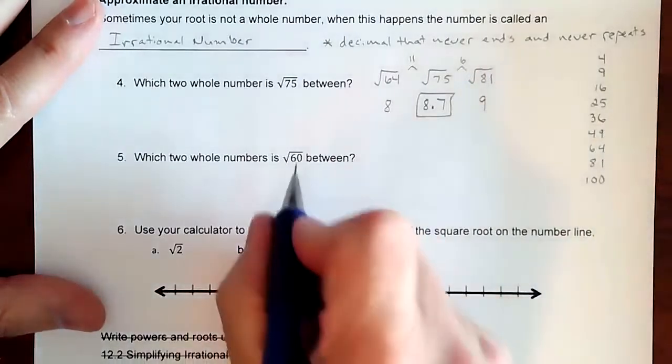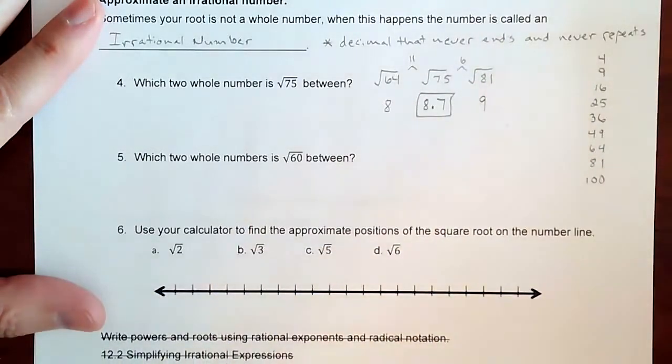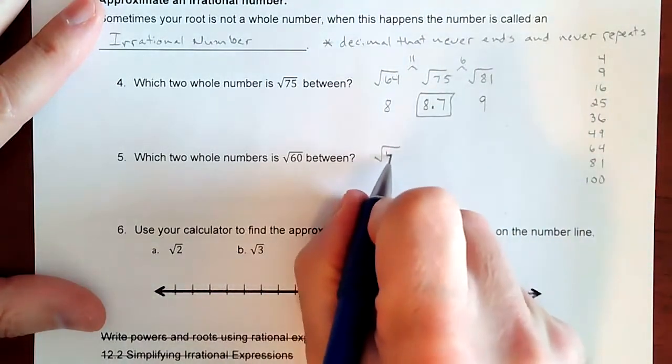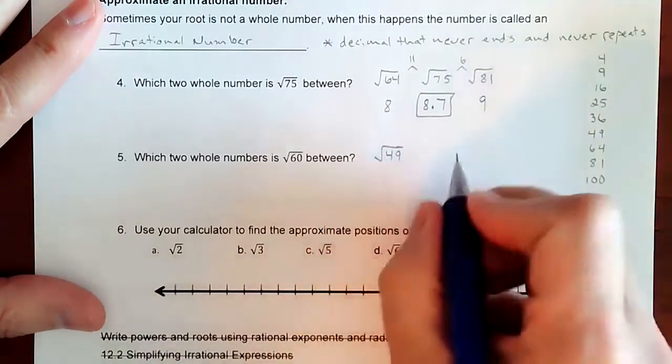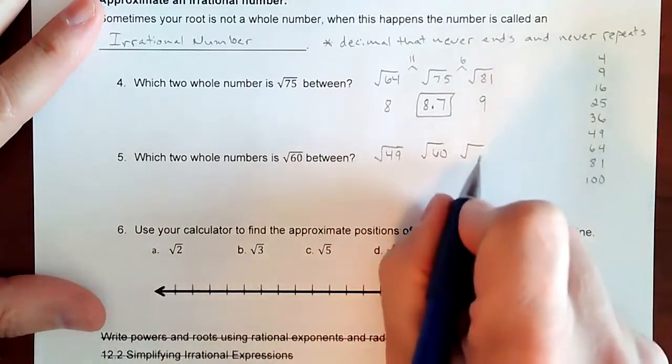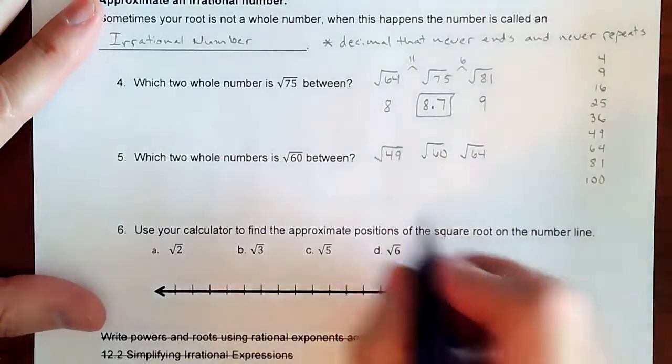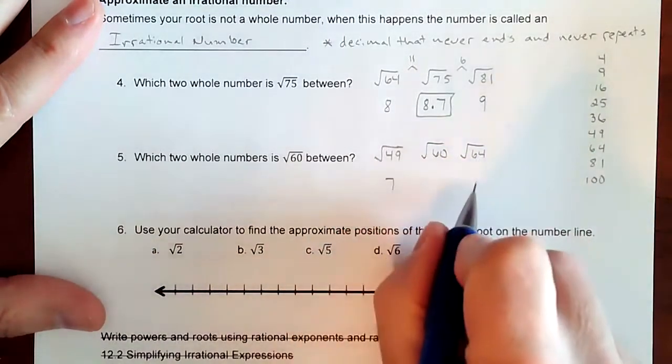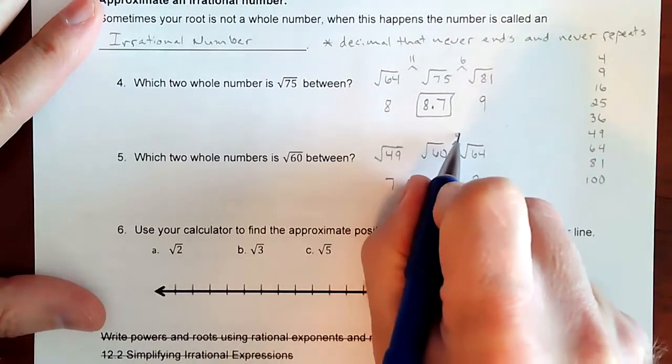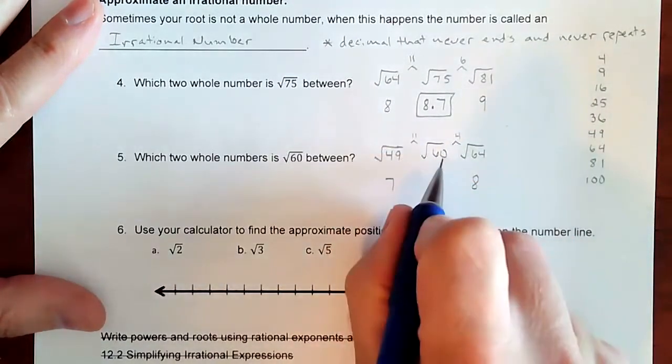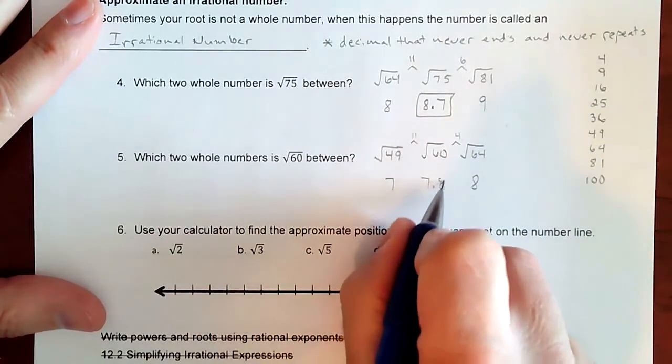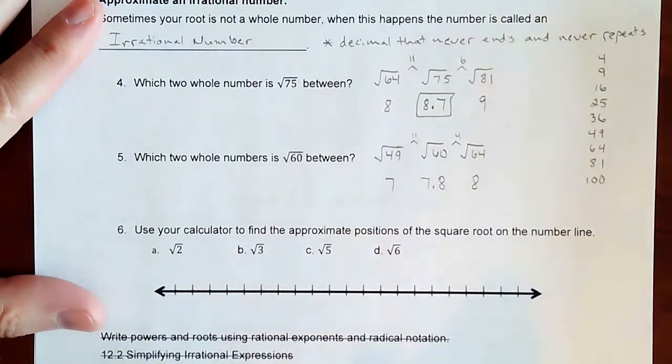And then same thing on this one, we want to look through our list, we want to surround it by perfect squares. So 60 would be in between these two. So it's going to be in between square root of 49 and square root of 64. So it's somewhere between 7 and 8, definitely favoring the 8 because that only differs by 4, where these two differ by 11. So this is going to be maybe like a 7.8-ish, something like that.